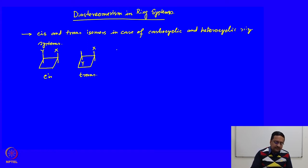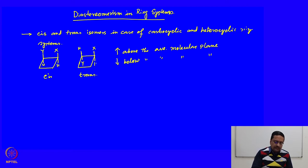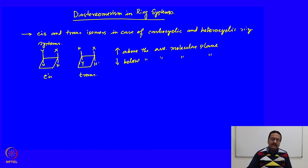In ring systems, some groups are considered to be above the average molecular plane. Beyond cyclopropane, cyclobutane, cyclopentane, cyclohexane and so on, the carbon atoms will not reside in one plane — they will reside in different sets of planes. Based on the orientation of those two groups above and below, we identify them as cis and trans isomers.